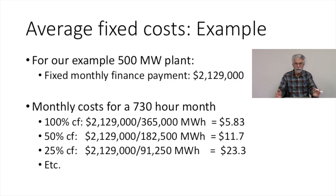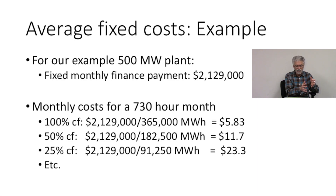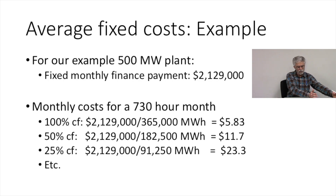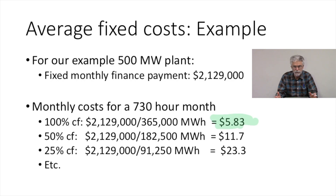A given month has about 730 hours. If our plant is running at 100% capacity factor, we have 500 megawatts for 730 hours in a month — that's 365,000 megawatt hours in a month. We take our monthly payment of $2,129,000, divide it by 365,000 megawatt hours, and we get an average fixed cost of $5.83 per megawatt hour.